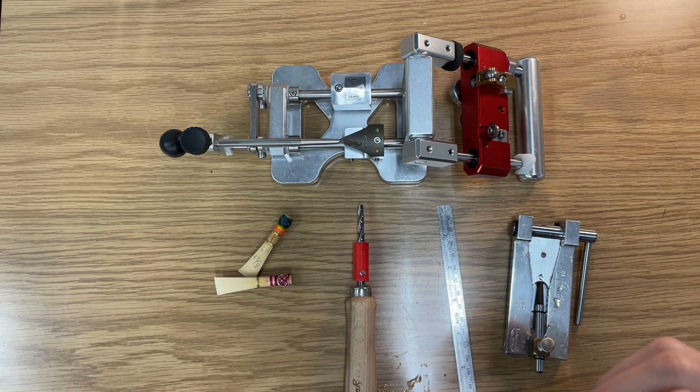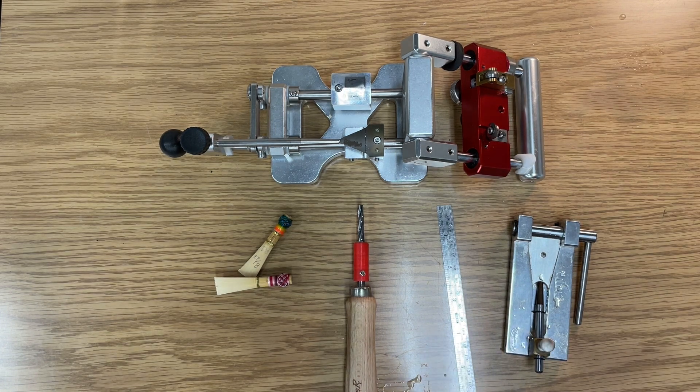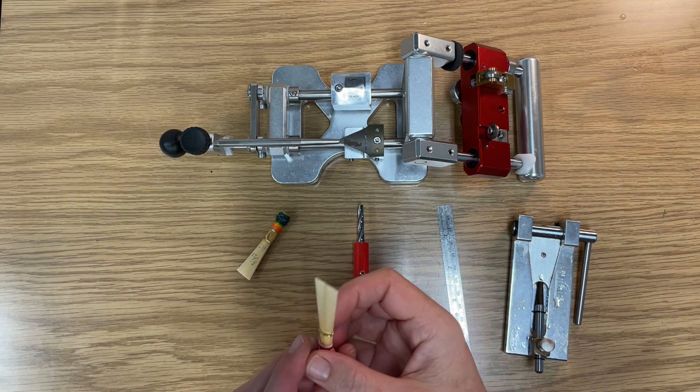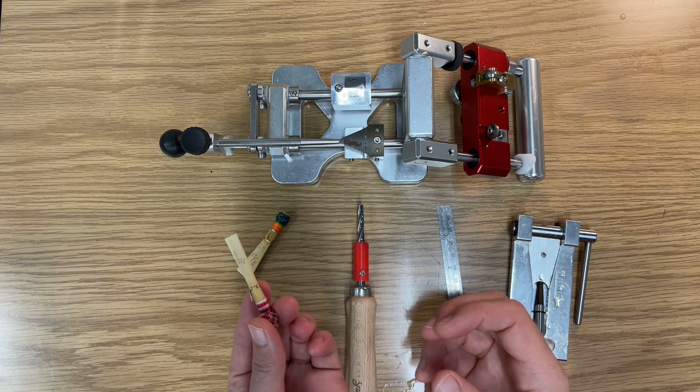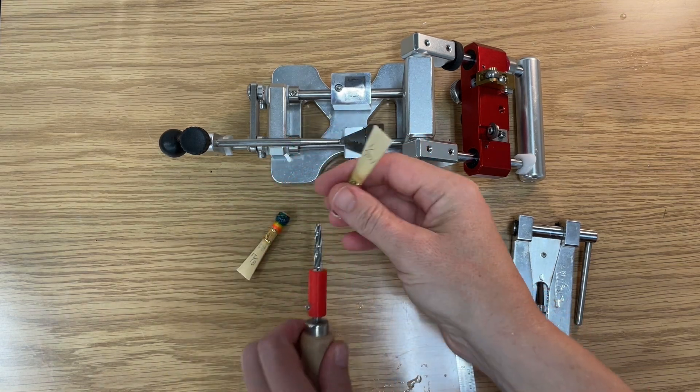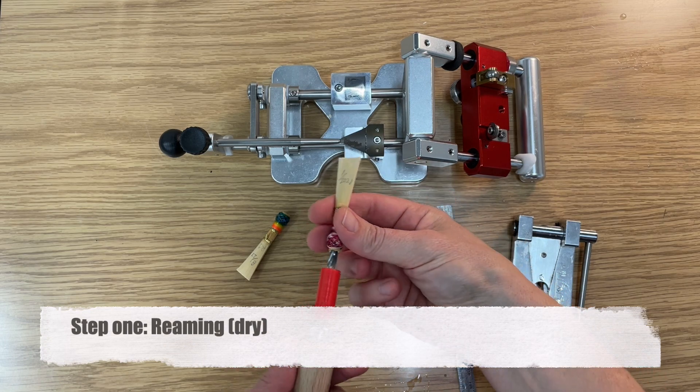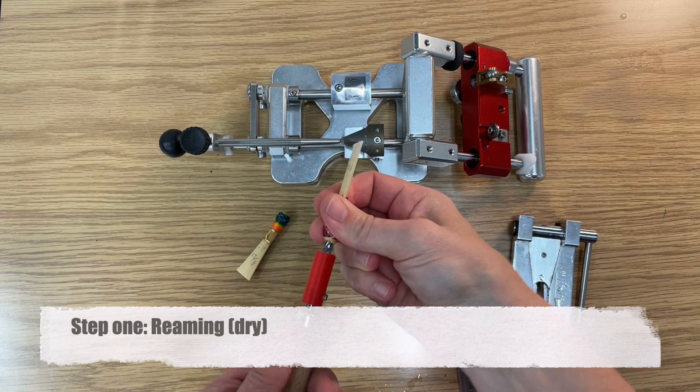This video is going to cover using the Andante Rondo Tip Profiler. We're starting from a blank here that has been wrapped and dried, and the first thing we're going to do is ream it to fit down to the red tube on my reamer.